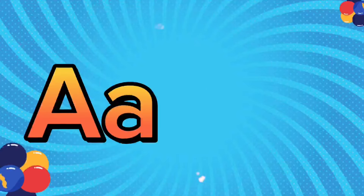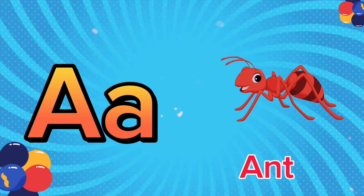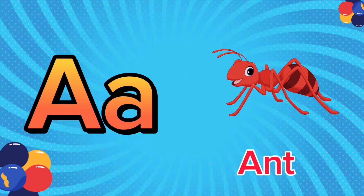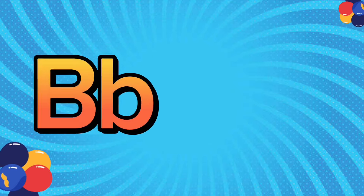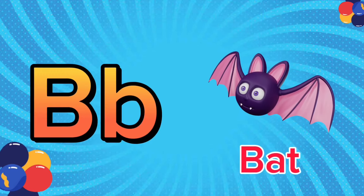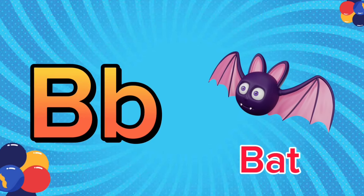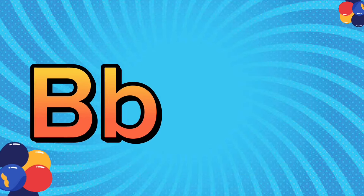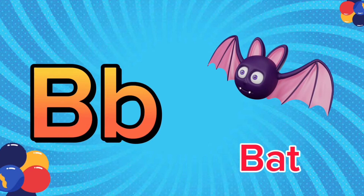A is for ant. A, A. Ant. A is for ant. A, A. B is for bat. B, B. Bat. B is for bat. B, B.